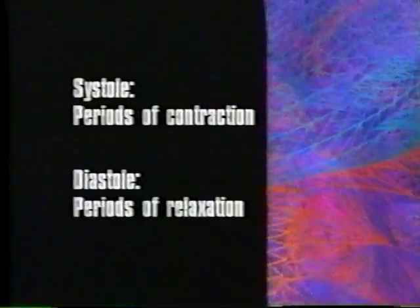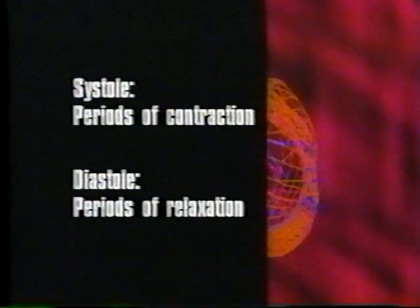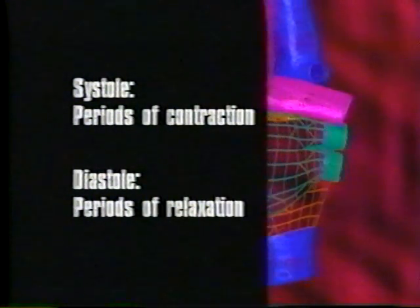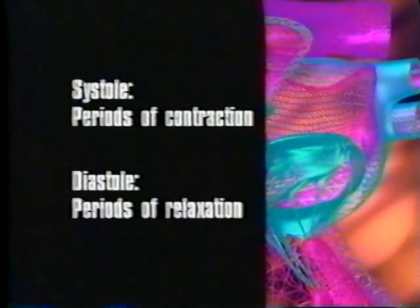The heartbeat relies on the coordinated contraction of cardiac muscle cells. The cardiac cycle refers to the sequence of events as the heart beats. It includes periods of contraction called systole and periods of relaxation called diastole. Heart valves prevent backflow of blood during ventricular systole and ventricular diastole.